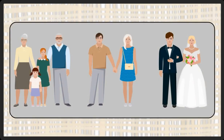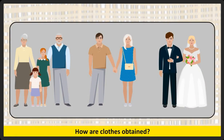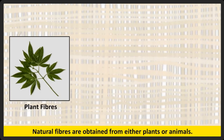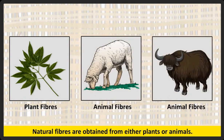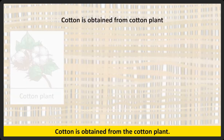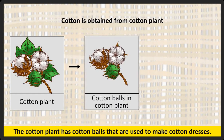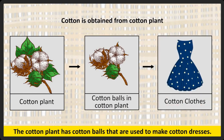When you wear different clothes, do you know how they are obtained? Clothes are obtained from natural and man-made fibers. Natural fibers are obtained from either plants or animals. Cotton is obtained from the cotton plant. The cotton plant has cotton balls that are used to make cotton clothes.